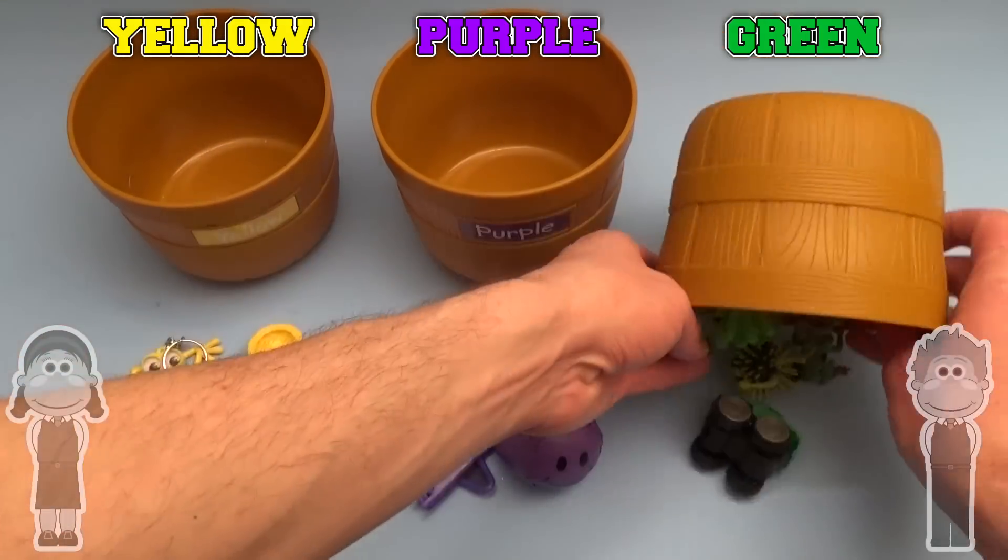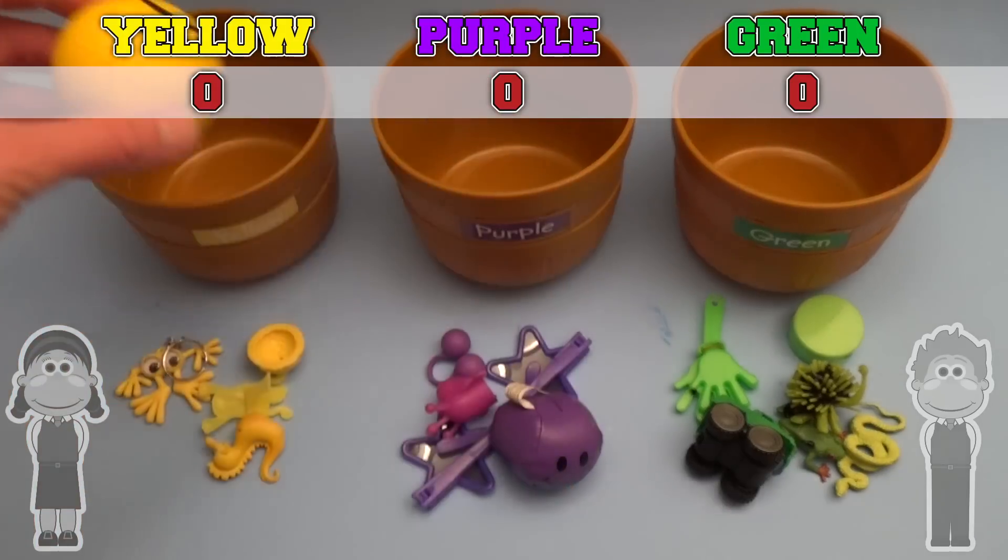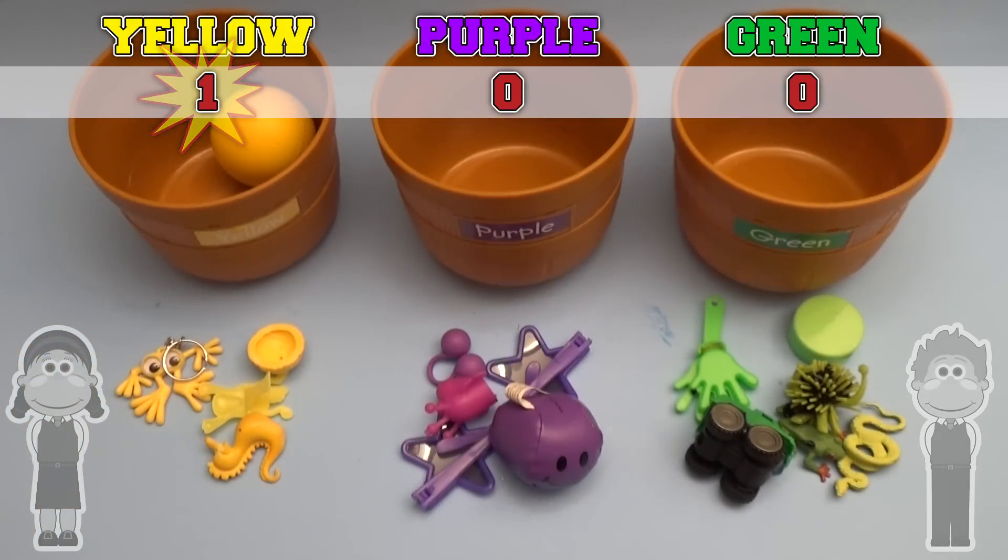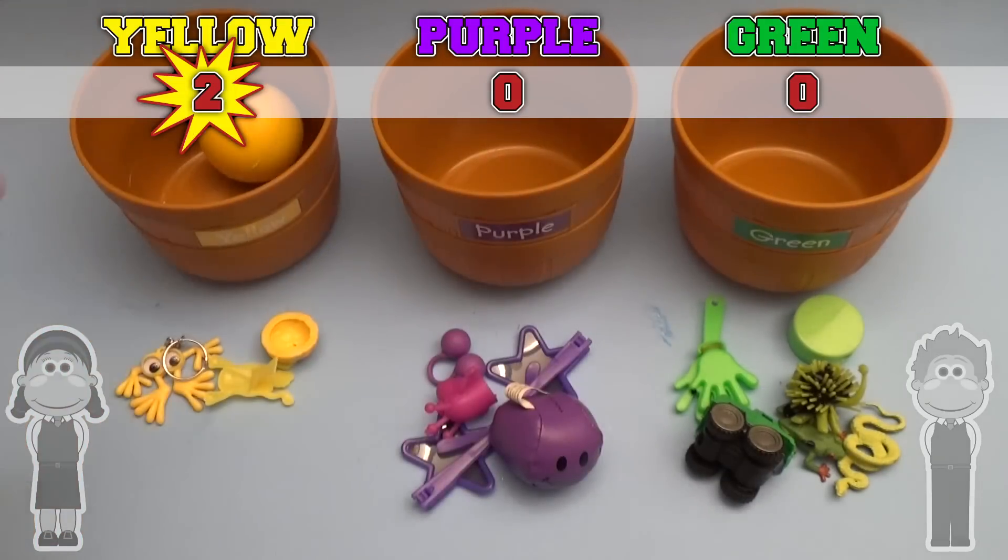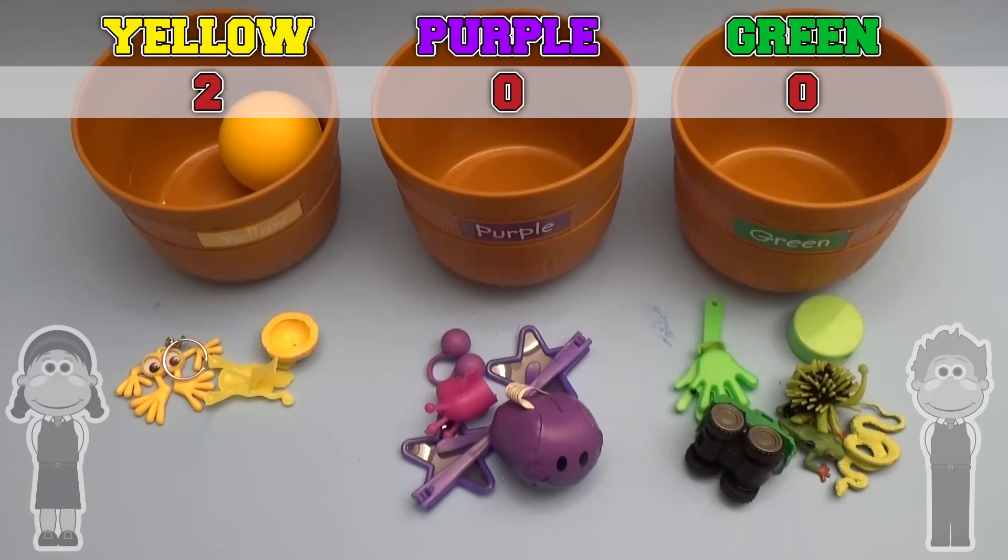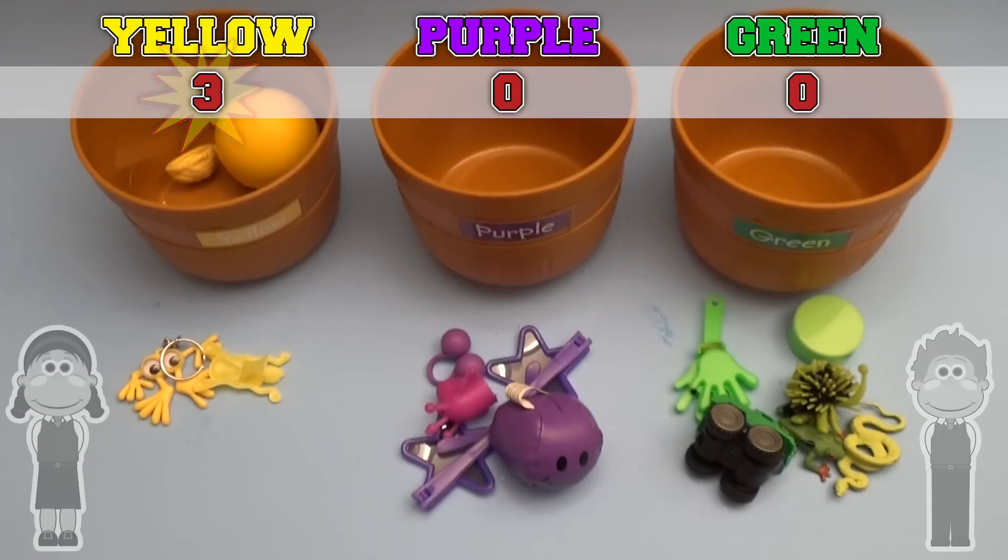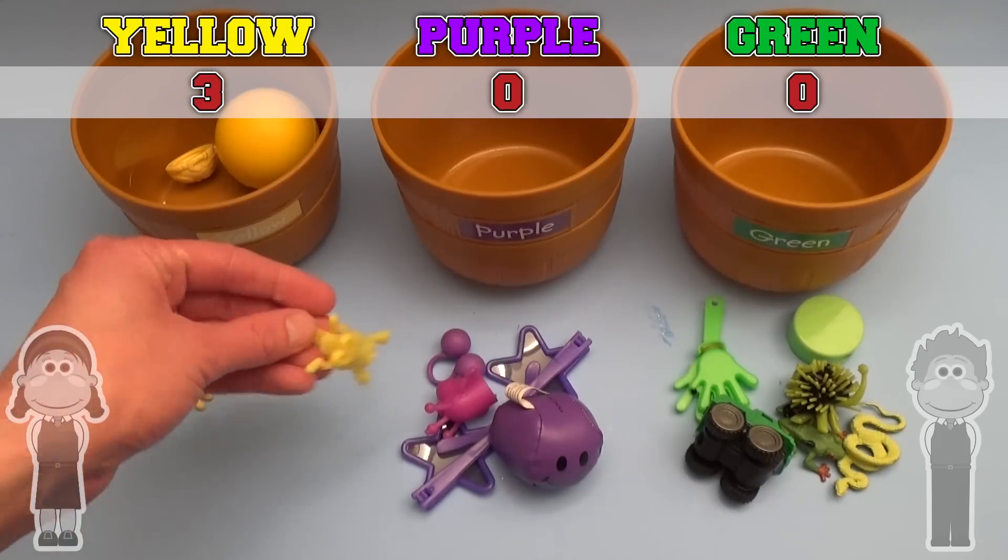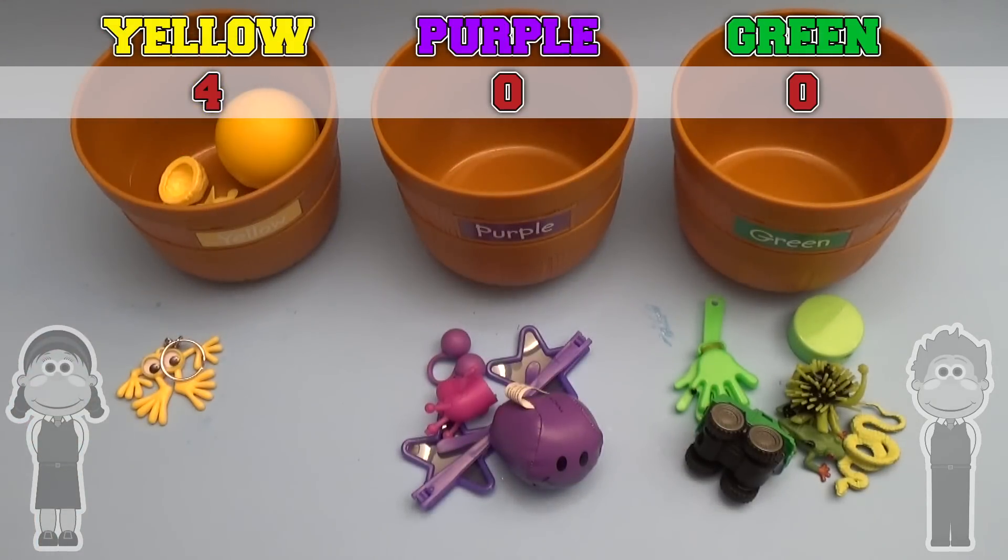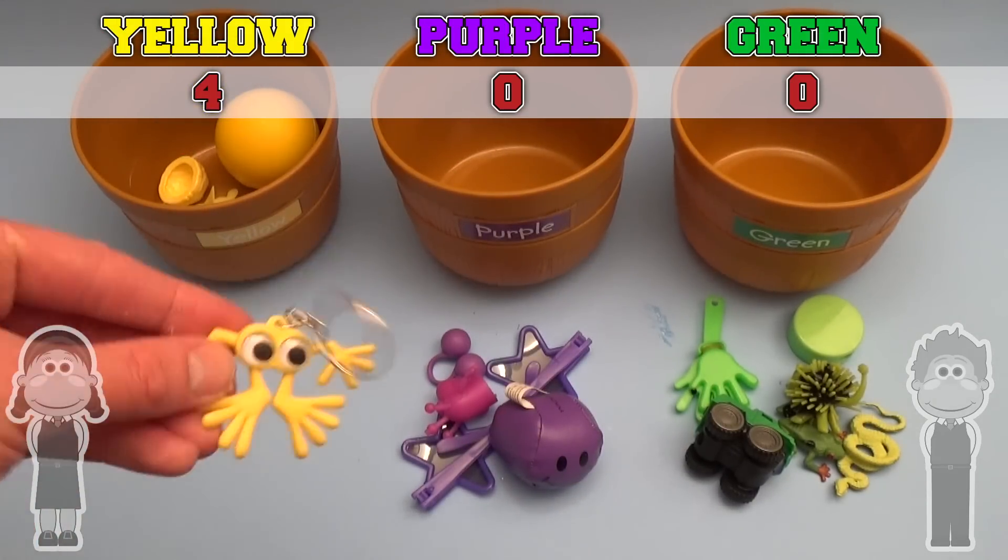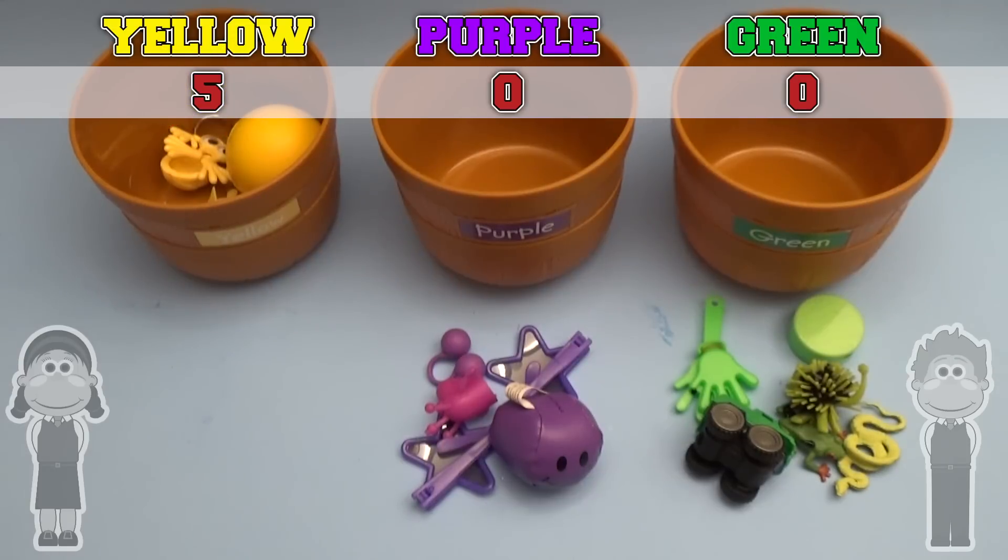Now let's see what color toys we have the most of. Let's count them up by color. Ready? One yellow toy. Two yellow toys. Three yellow toys. Five yellow toys.